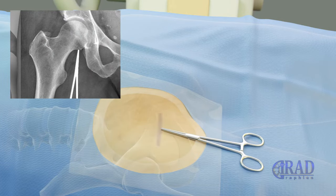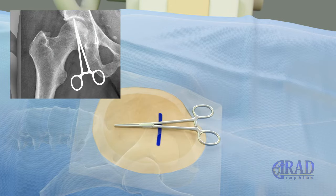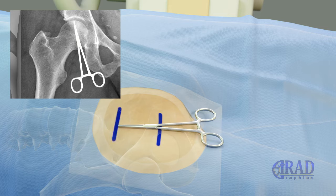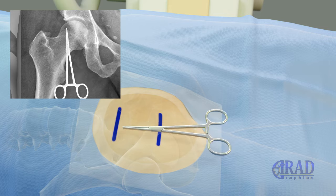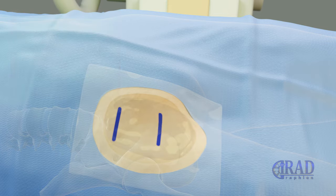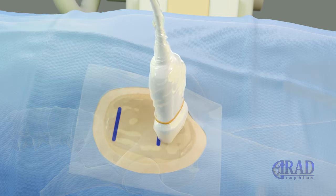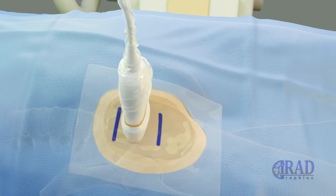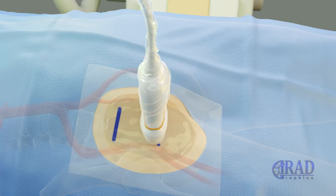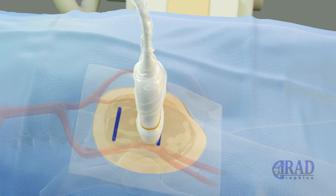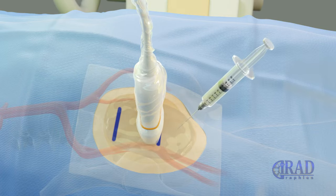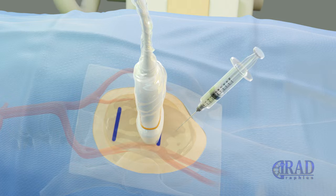As the first step, skin in the right groin area is marked based on the upper and lower margins of the right femoral head. Once the desired location of the common femoral artery for access is picked up under ultrasound, the skin entry site is numbed by injecting lidocaine.